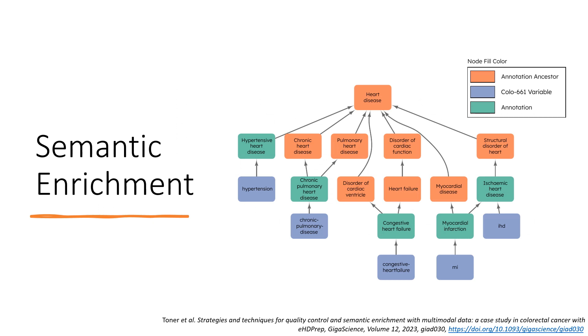eHDprep also has functionality for semantic enrichment. The example here shows how five dataset variables in purple are mapped into a clinical ontology by the green nodes, and that they share the most informative common ancestor of heart disease. With this semantic commonality identified, the values in these variables are aggregated and incorporated into the dataset, to enrich it for later analysis.